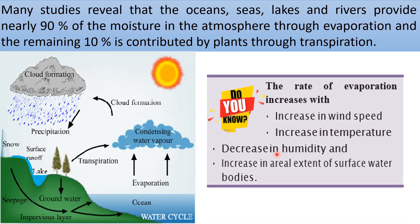Just as a wet cloth cannot wipe up more water, when the atmosphere already has water vapor and humidity is high, it cannot evaporate more water from the water body. So increase in humidity decreases the rate of evaporation. Increase in aerial extent of surface water bodies also increases the rate of evaporation. In summary, the rate of evaporation increases with increase in wind speed, increase in temperature, decrease in humidity, and increase in aerial extent of surface water bodies.